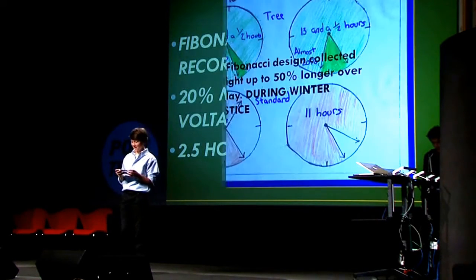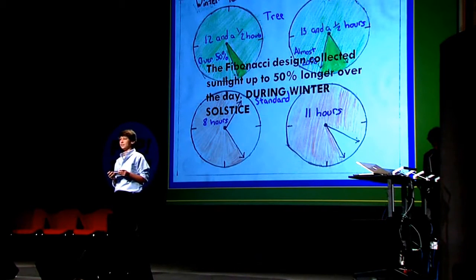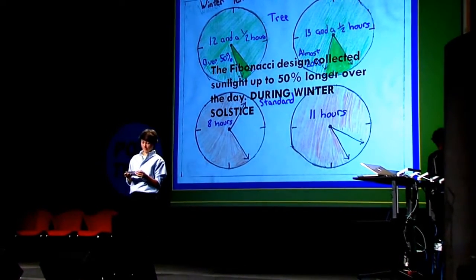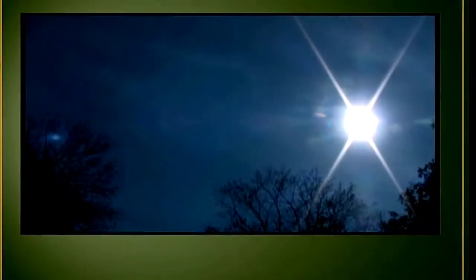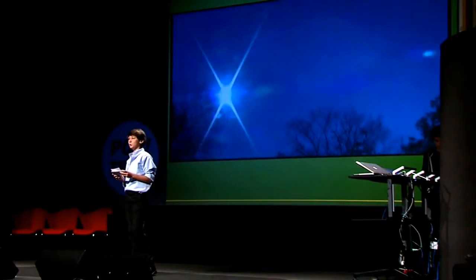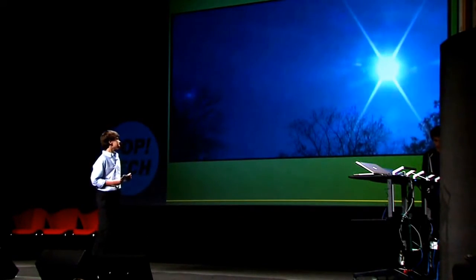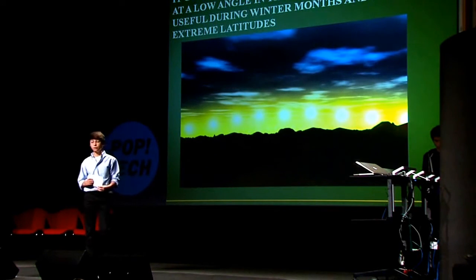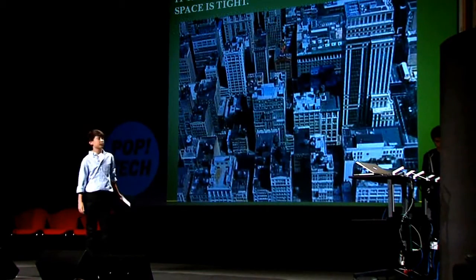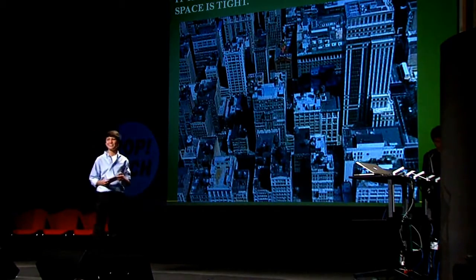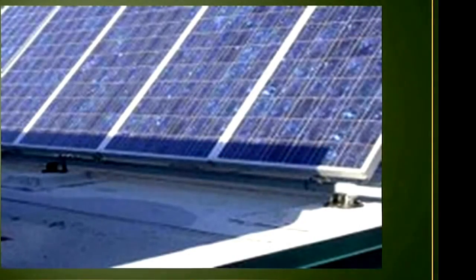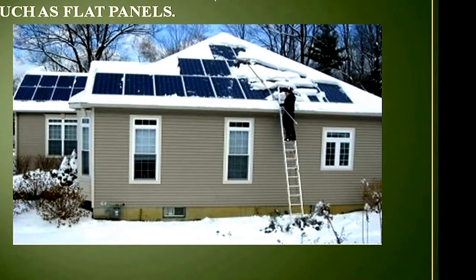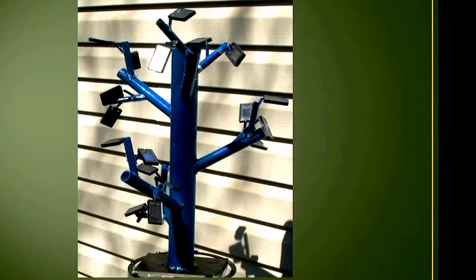The most interesting results were in December, at the winter solstice when the sun was at a low point in the sky — the Fibonacci design collected sunlight up to 50% longer over the day. I discovered the Fibonacci pattern allows a tree to track the sun better as it moves through the sky. My results suggest it can improve solar panel arrays in several ways: it collects more sunlight at low sun angles, may prove useful for winter months at extreme latitudes, takes up less room in urban areas, is not affected as much by shadows, collects less rain, dirt, and snow than flat panels — and it looks a lot nicer.